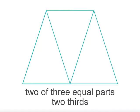For this shape, it is divided into three equal parts, so each part shows a value of one third. To show two of three equal parts, or two thirds, we shade in two of the parts.